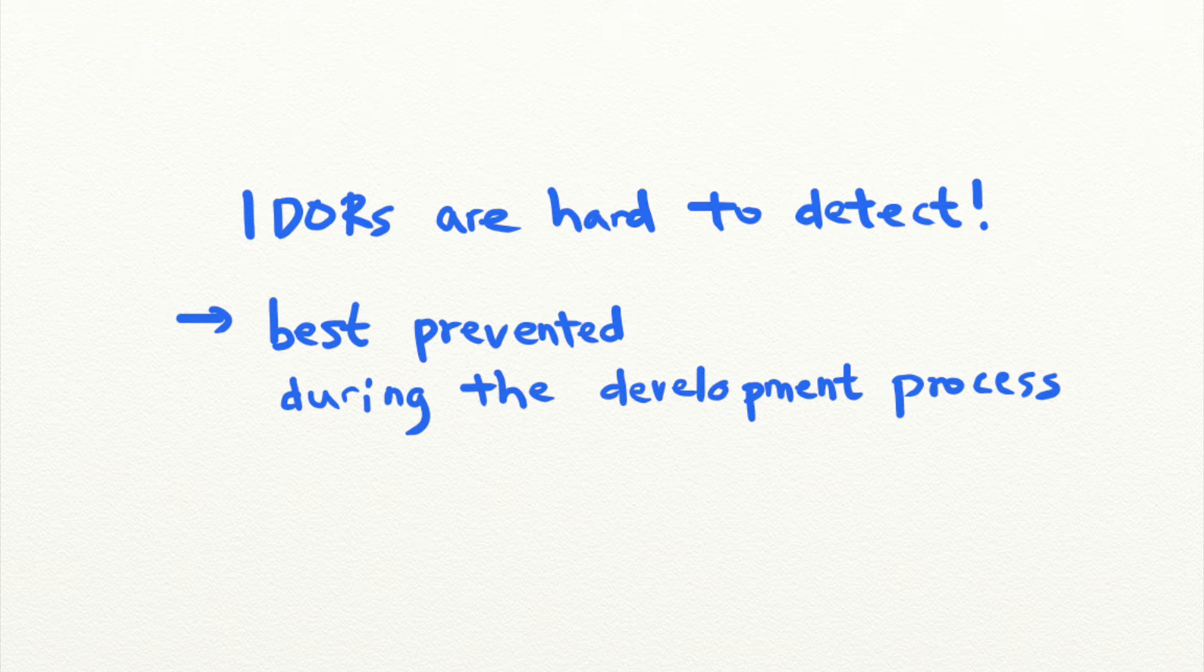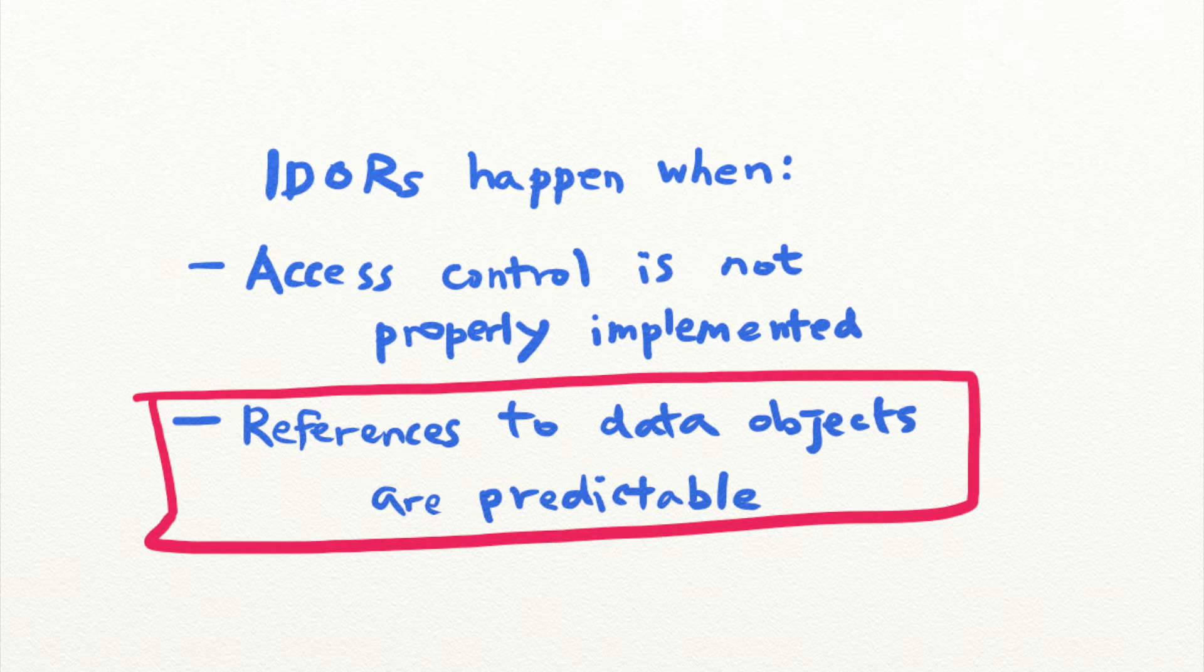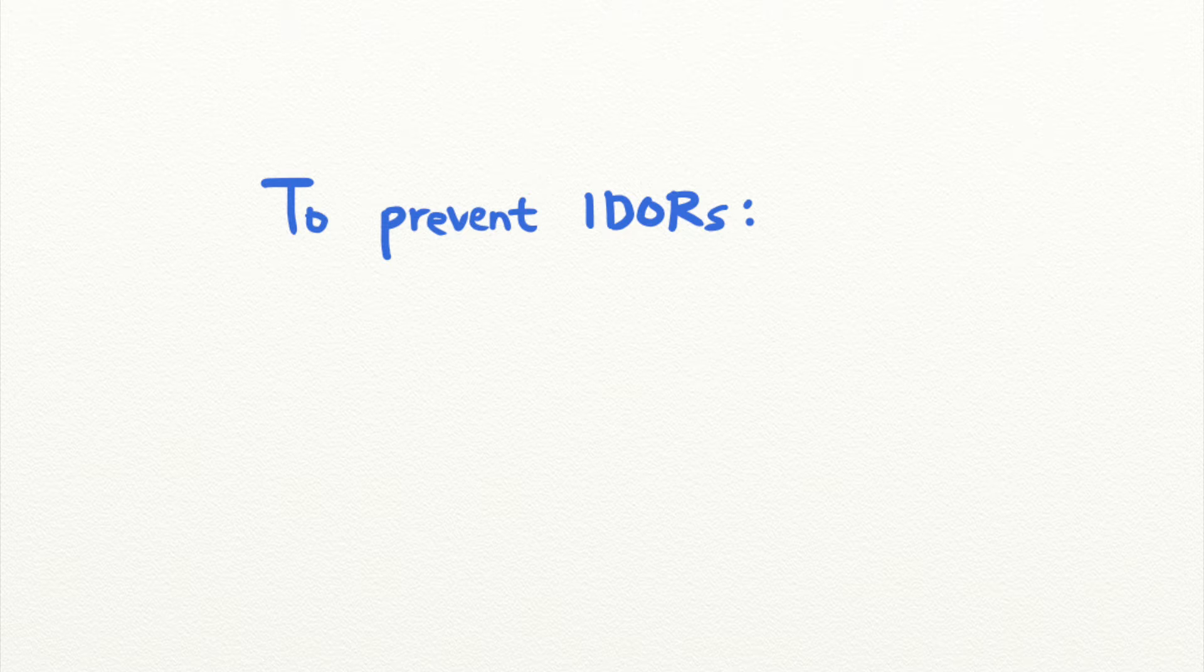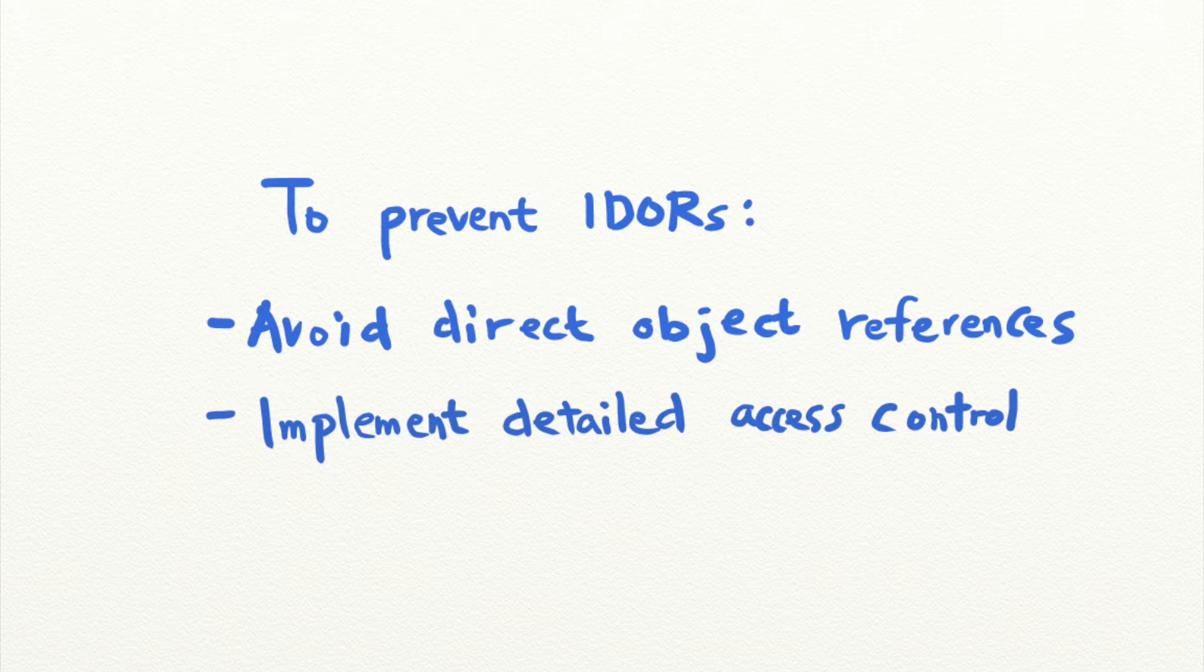For an IDOR vulnerability to be exploitable, two things need to be true: a direct object reference to the data objects and a lack of access control. So to prevent IDORs, applications can avoid direct object references and implement detailed access control for each application resource.